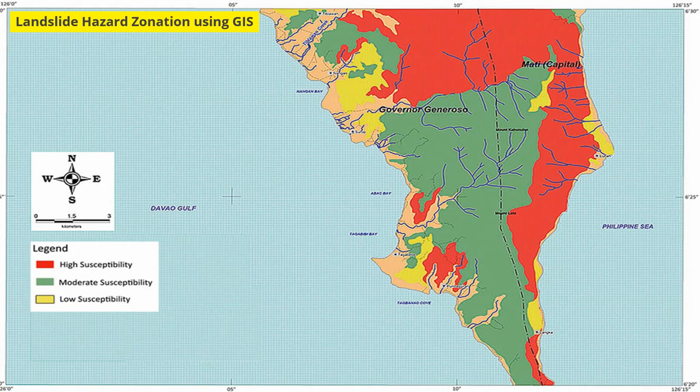Now, landslide hazard zonation using GIS. Landslide hazard zonation is the process of ranking different parts of an area according to the degree of actual or potential hazard from landslides.